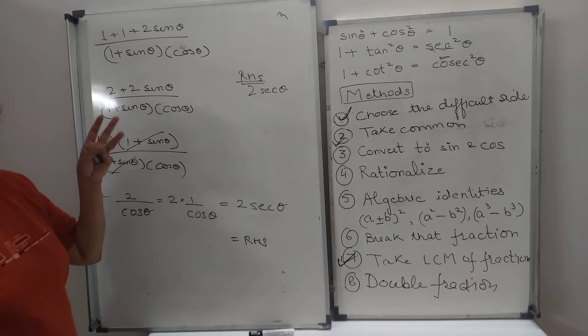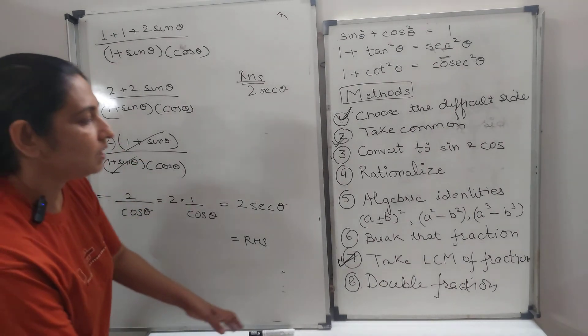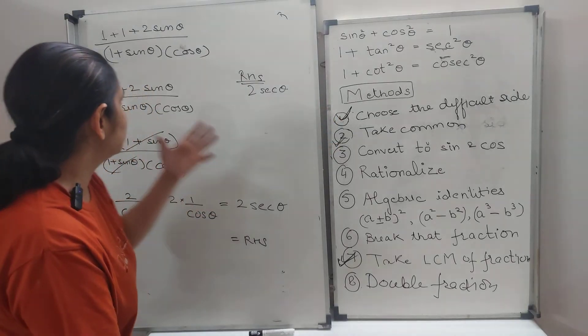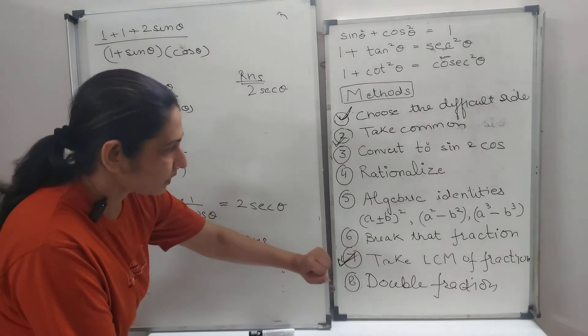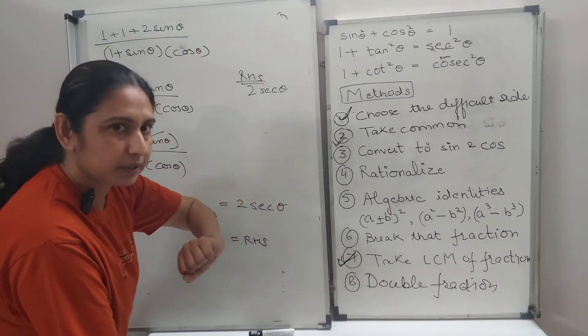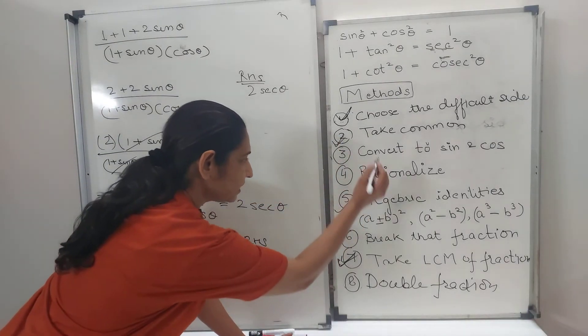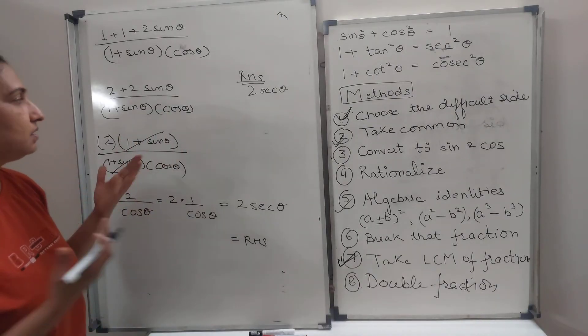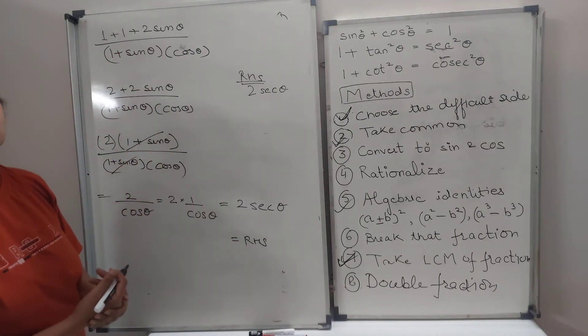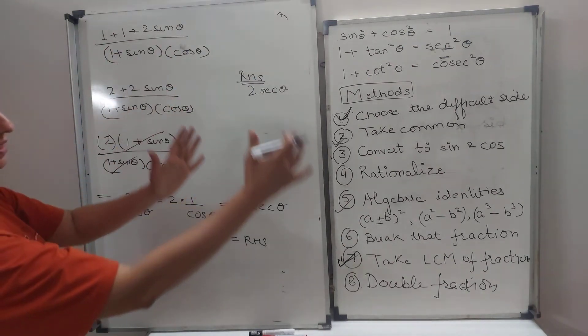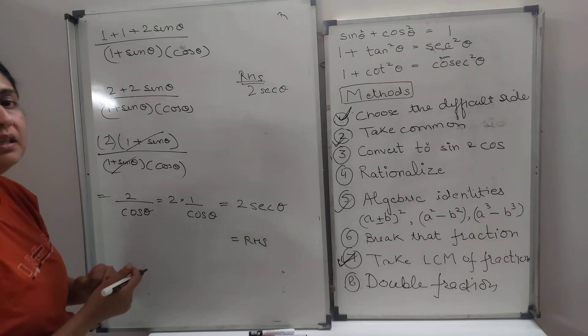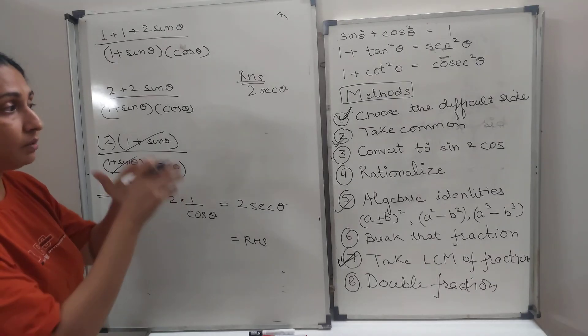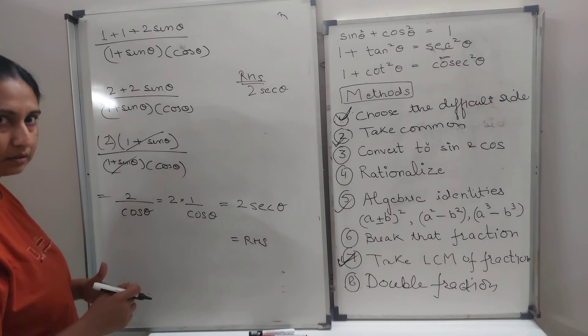Primary objective is not to solve only this question. The primary objective is to see which method would be applicable. Because we saw 2 fractions, I thought, let me take LCM. Then there was something getting common in between. There was use of algebraic identity A plus B whole square. So, a combination out of these 7-8 things, I used 3 things depending on what I saw that time. So, you have to be very careful. You can always write down in a rough section and keep referring to it. What method should I use to go ahead into this?